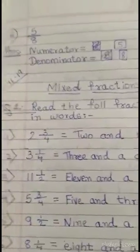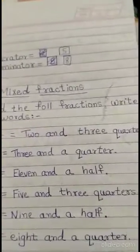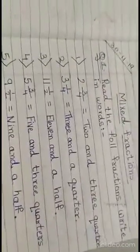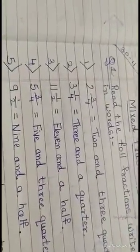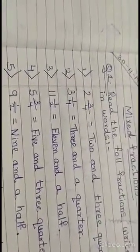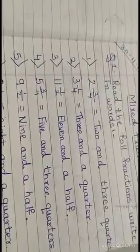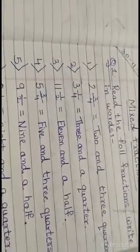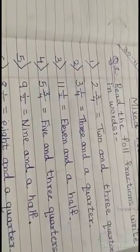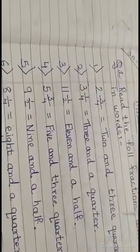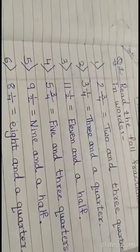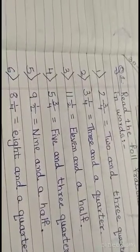Page number 56 — mixed fractions. See question number 1: read the following fractions and write in words. Question number 1: 2 and 3 upon 4 — that is 2 and 3 quarters. 3 upon 4 will be written as 3 quarters. Second one: 3 and 1 upon 4 will be written as 3 and a quarter. 1 upon 4 will be written as quarter. Number 3: 11 and 1 upon 2 — that will be written as 11 and a half. 1 by 2 is called half.